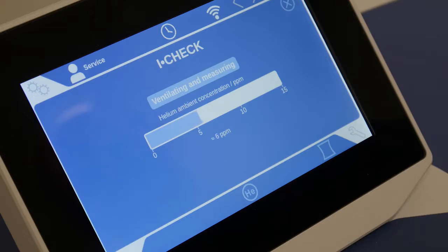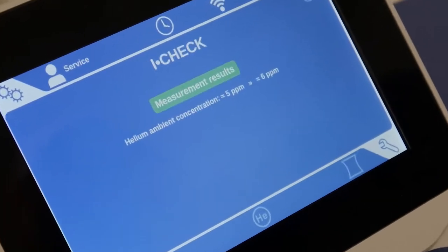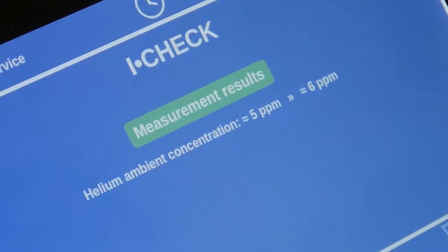We now read the natural background concentration of 6 ppm. In particular, this function checks whether excessive helium has led to increased background levels. Very high background helium levels can adversely influence the leak testing procedure.